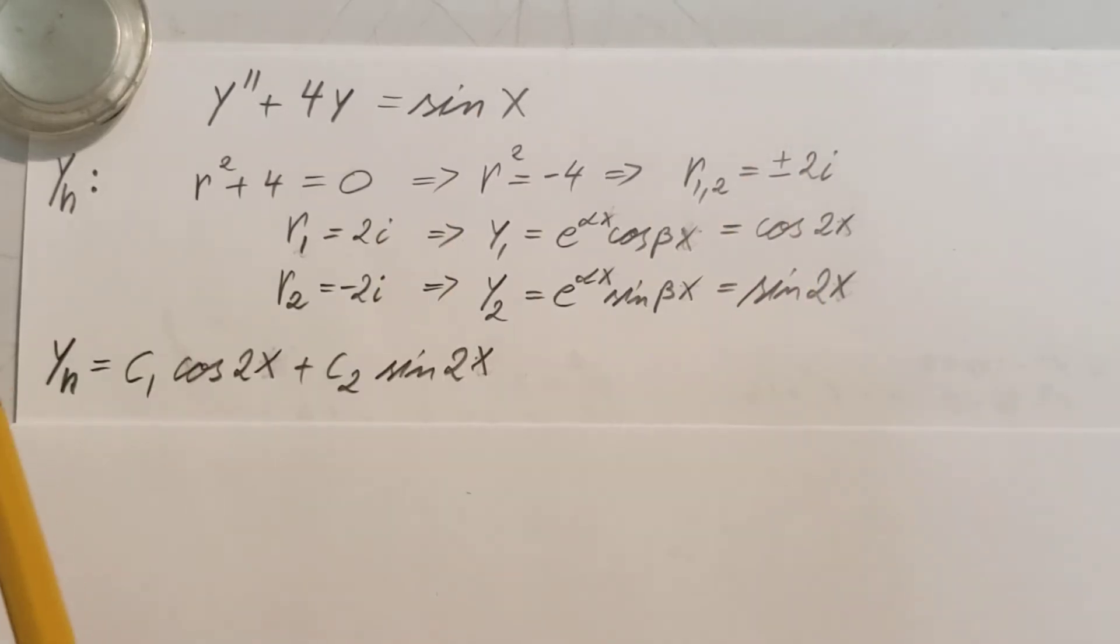So yₕ, our homogeneous solution: c₁ cos 2x + c₂ sin 2x.